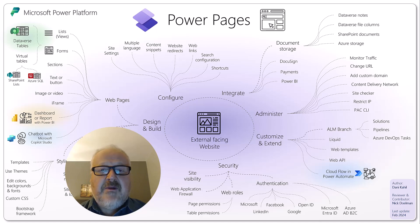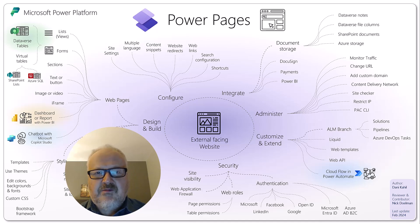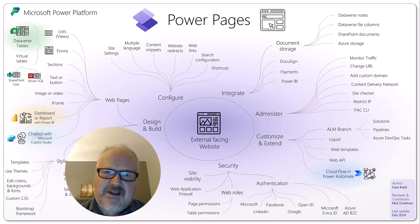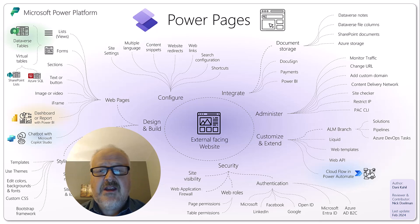Authentication options include Azure B2C, Entra, OpenID, Google, and Facebook. There is also an out-of-the-box authentication mechanism good for testing but not recommended for production. Because the external user maps to a contact record, the security system — web roles, page permissions, table permissions — is all linked to a contact rather than a system user, though the concepts parallel each other.